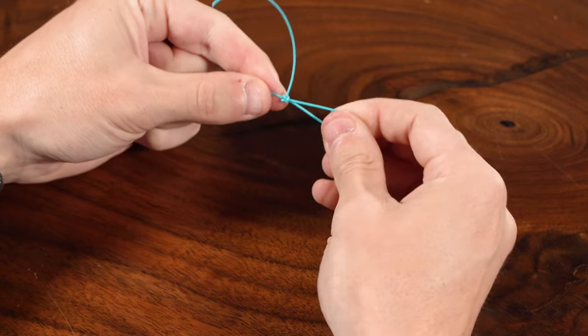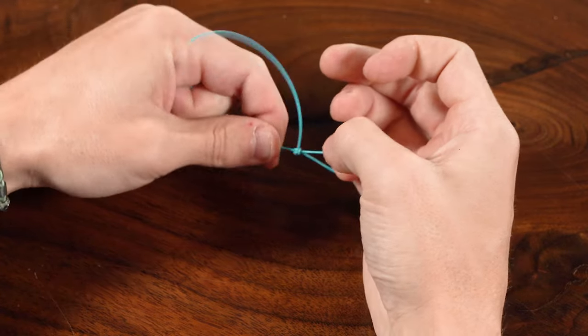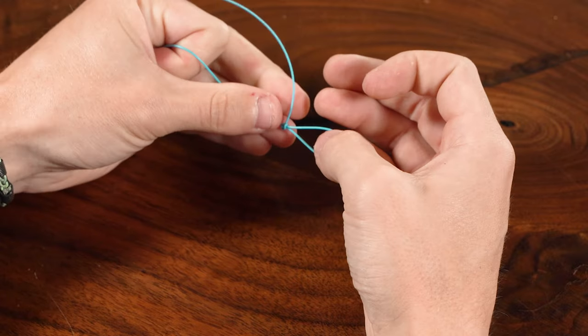But here you can see it's pointed 90 degrees from the knot itself and that knot is strong. You can pull on that and that loop is not going to slip.